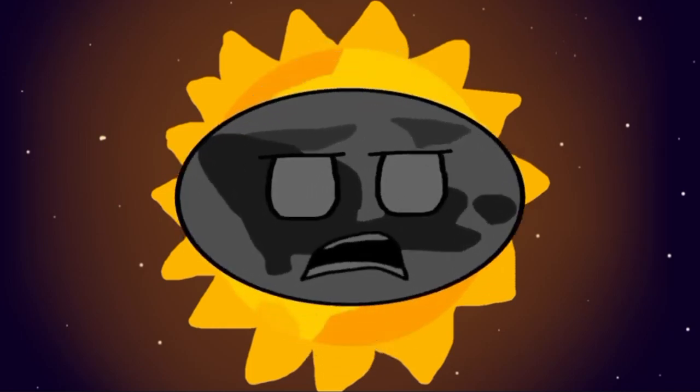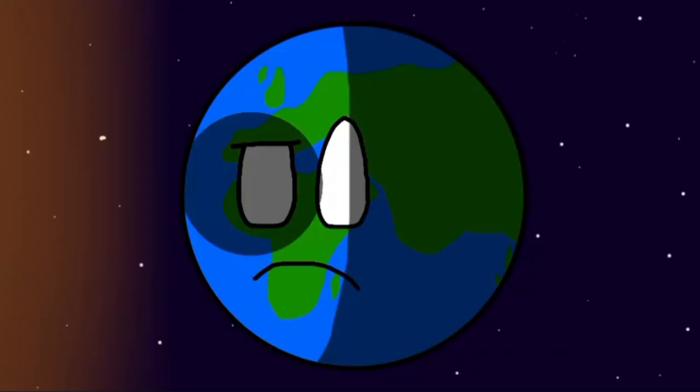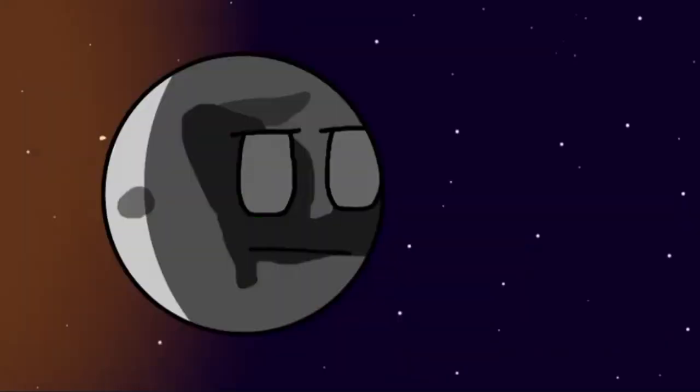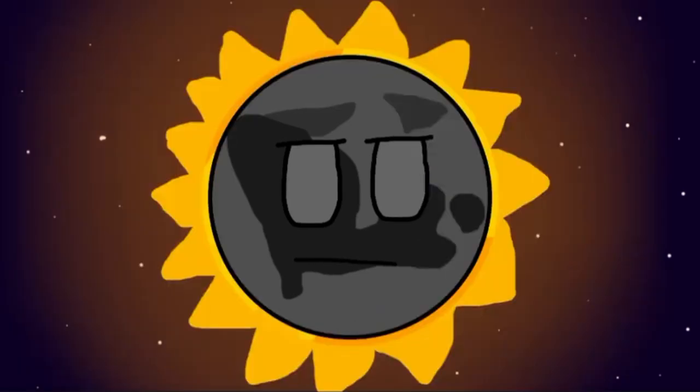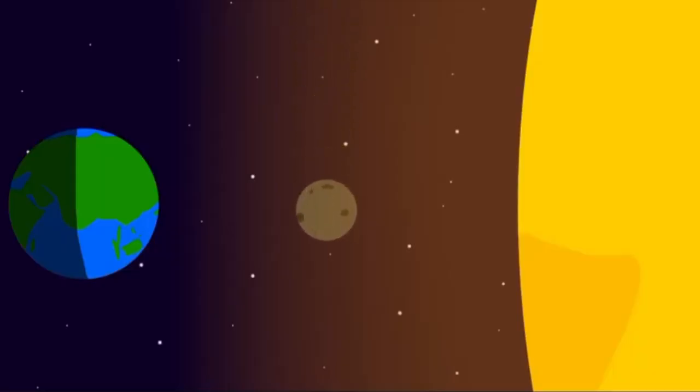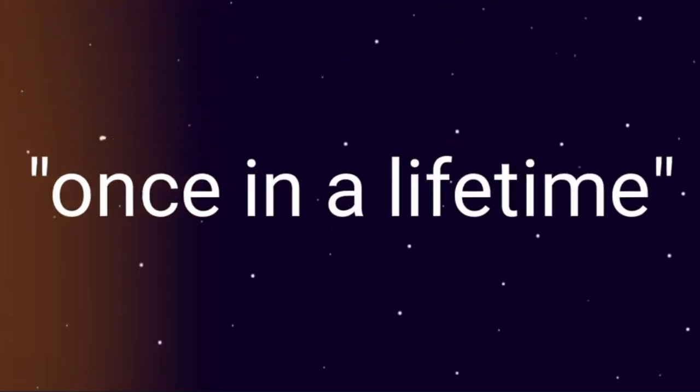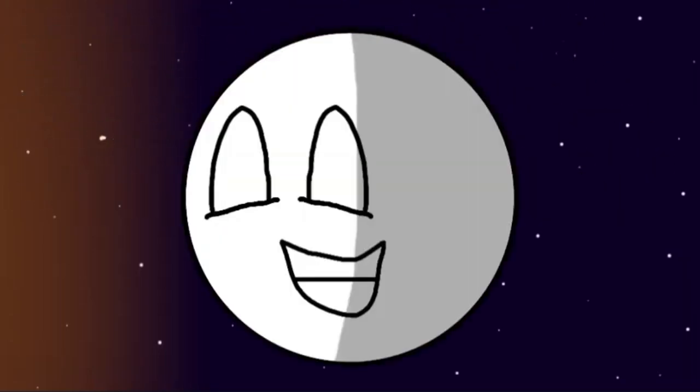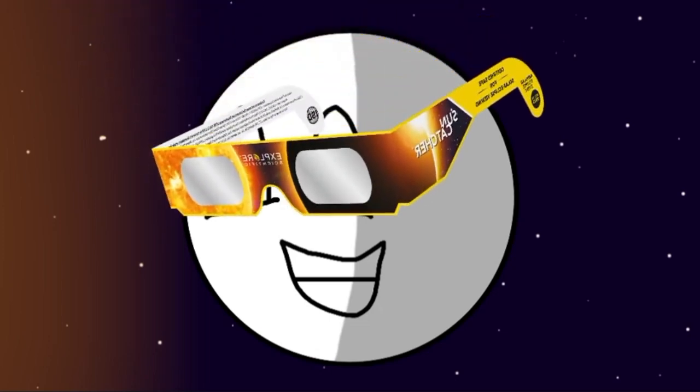So, for your information, Earth, your Earthlings actually love it when this happens. What? How could they love it when you're blocking the thing they need to live? A solar eclipse is when I go in between you and the sun. It tends to be a once-in-a-lifetime thing for your Earthlings. They've even made little glasses for it so they can look at it and not go blind.